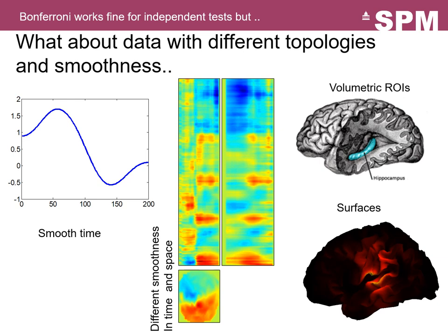Neuroimaging is actually a fantastic example of datasets with quite a lot of spatial structure. We have time series with fewer independent tests than samples, sensor-level topographies from MEG and EEG data with strong spatial structure on the scalp and in the time domain, and spatial structure in volumetric and cortical surface source reconstruction analyses. In all these cases, Bonferroni correction would be far too stringent because it doesn't account for all this spatial structure in the data.